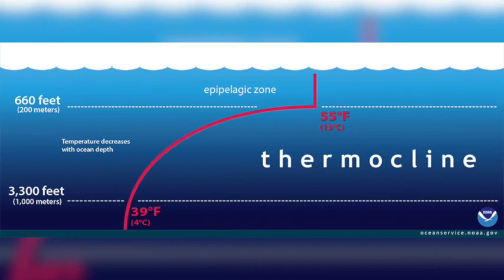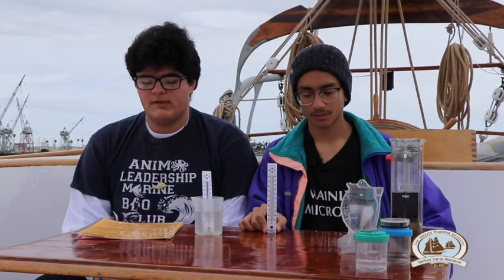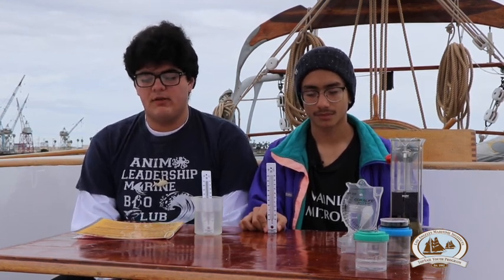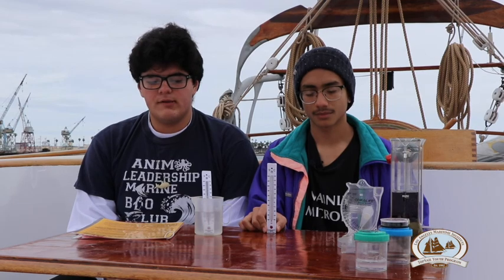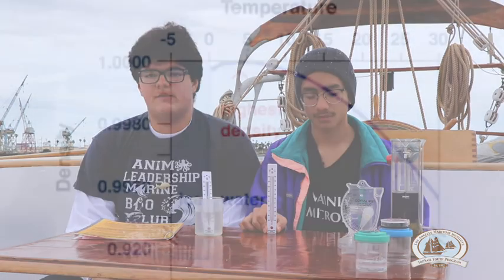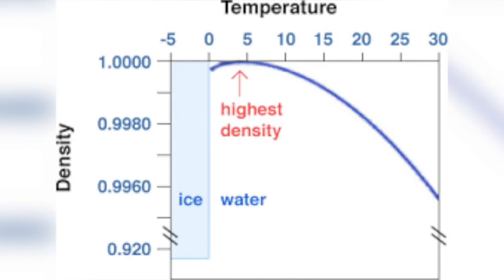How cold do you think the temperature can get deep down in the ocean? Can it freeze? Theoretically, if water gets below 32 degrees Fahrenheit it should freeze, but we're talking about salt water. Salt actually lowers the freezing temperature of water by a few degrees — which is why they put salt on roads back east to melt snow and ice. Because of the salt concentration in the ocean, the water can get very cold deep down but can't reach a point of being completely frozen.